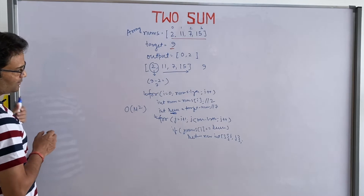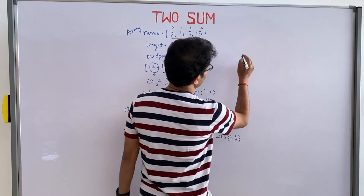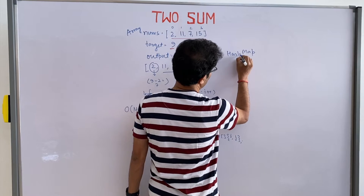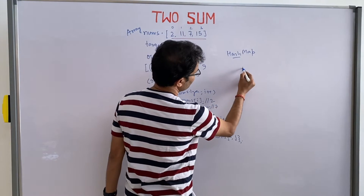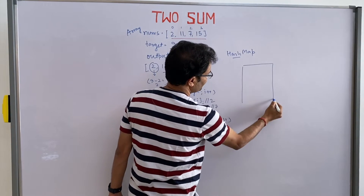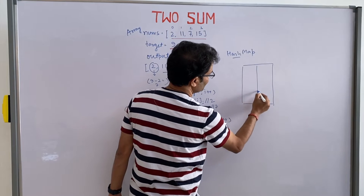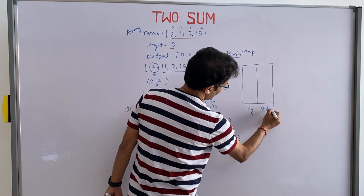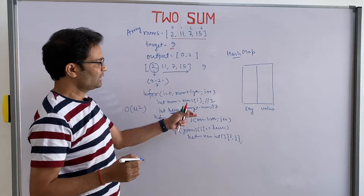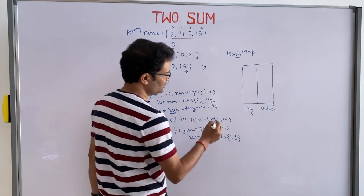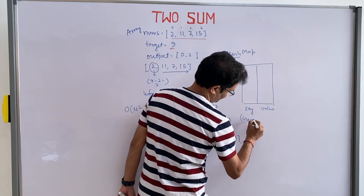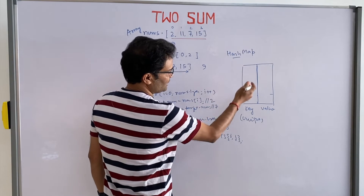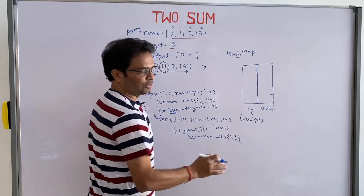What if you use a HashMap? A HashMap has two columns: one is called the key and one is called the value. The key is always unique. So the map stores key-value pairs where the key is unique.